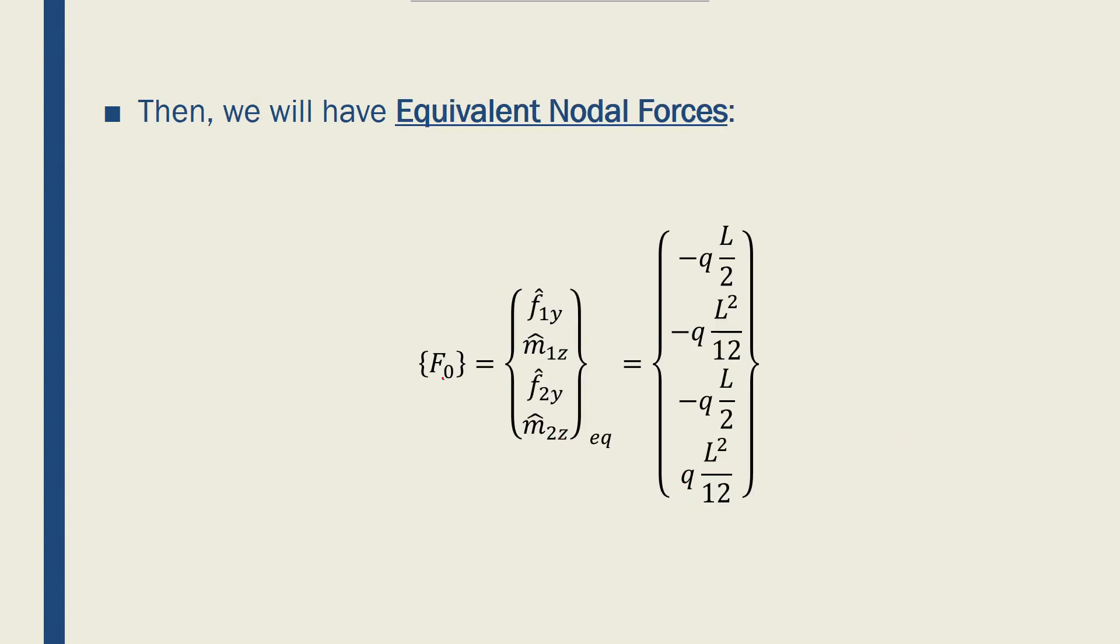We find F₀, which is called the equivalent nodal force, which is [f1y, m1z, f2y, m2z], with eq showing that this is equivalent nodal force, becomes equal to [-qL/2, -qL²/12, -qL/2, qL²/12].